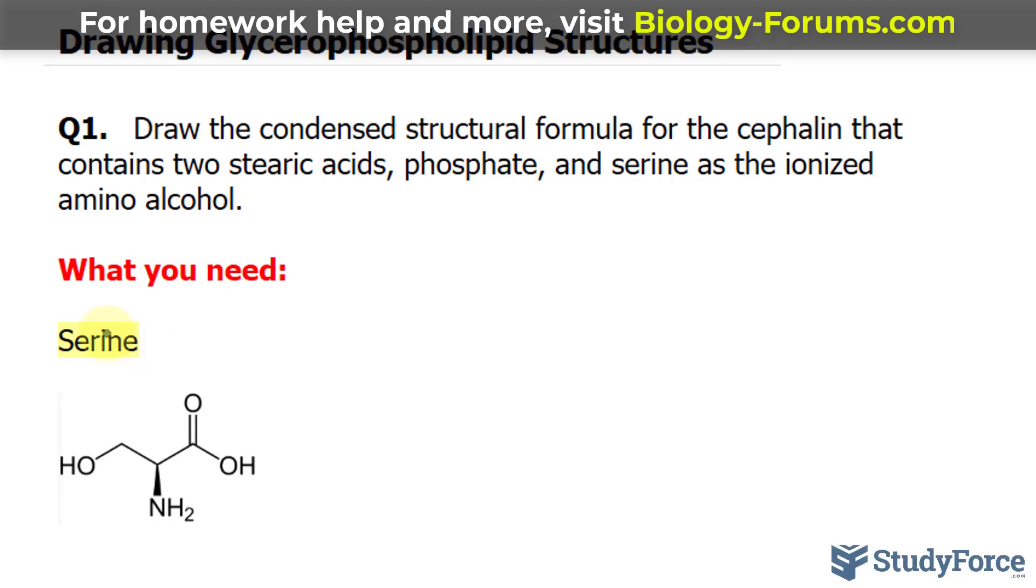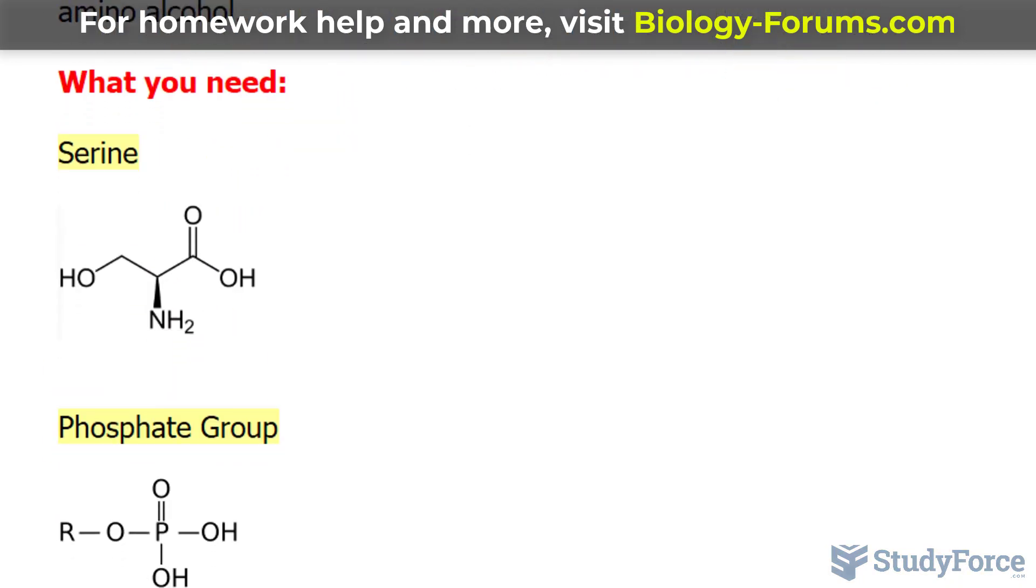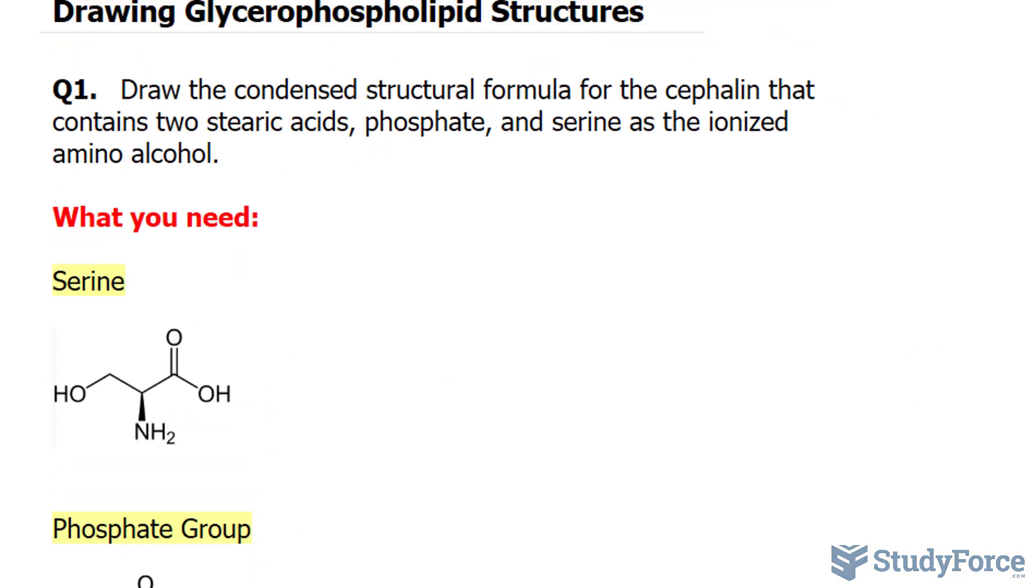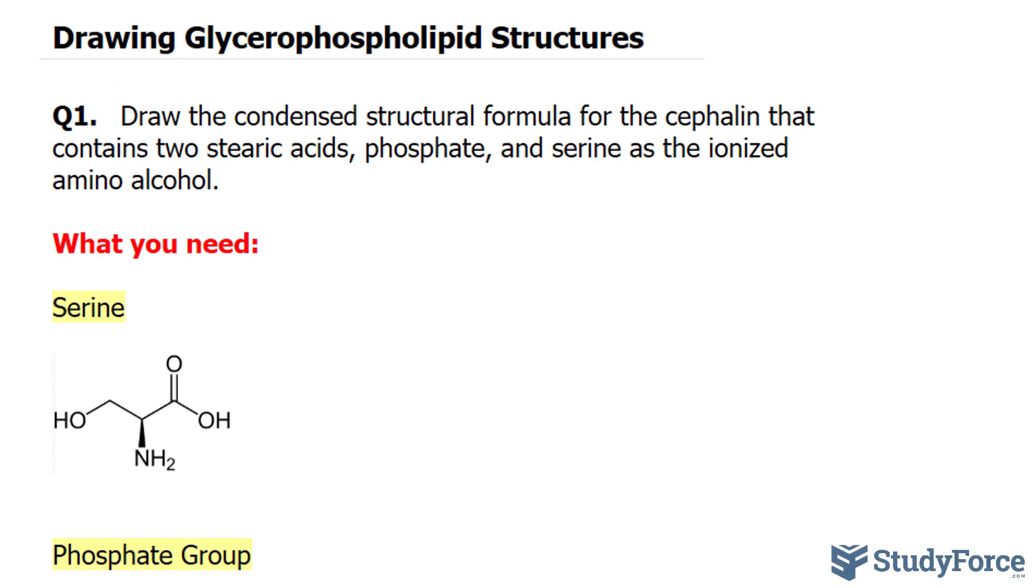For reference, I've shown what serine looks like and what the phosphate group looks like. By now, we should know what a glycerol molecule looks like. It looks like this, where you have this carbon backbone, and they're bonded to three hydroxyl groups.